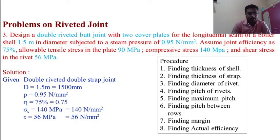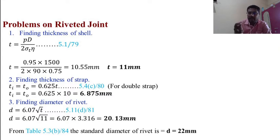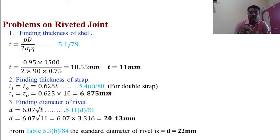First, finding the thickness of the shell. t = PD / (2 × σt × η). This is equation 5.1 from page 79 of the data handbook. Substituting values: t = (0.95 × 1500) / (2 × 90 × 0.75) = 10.55 mm.